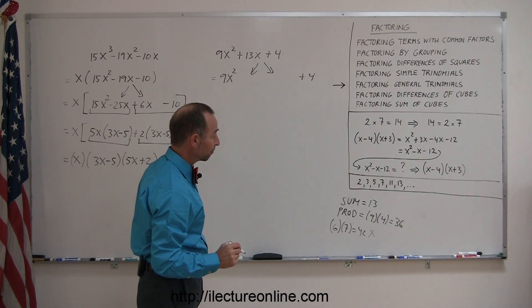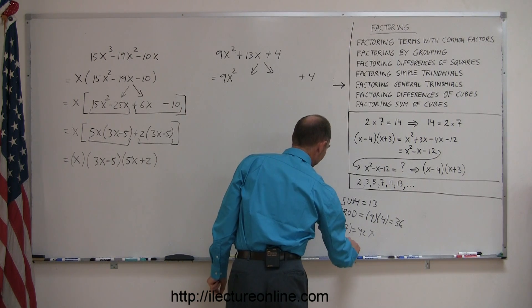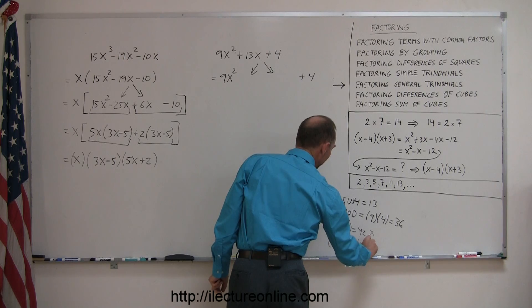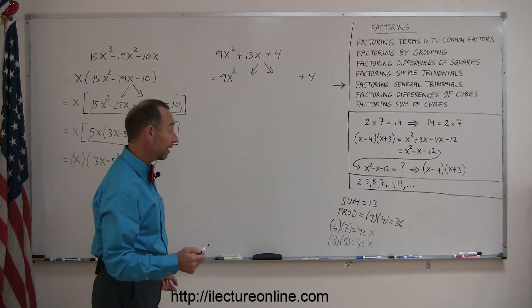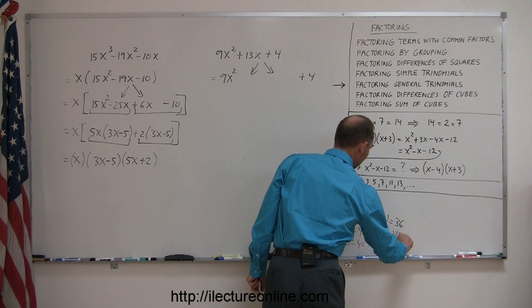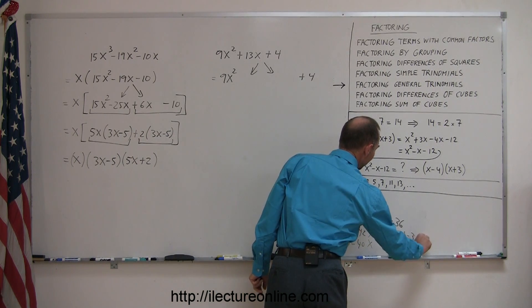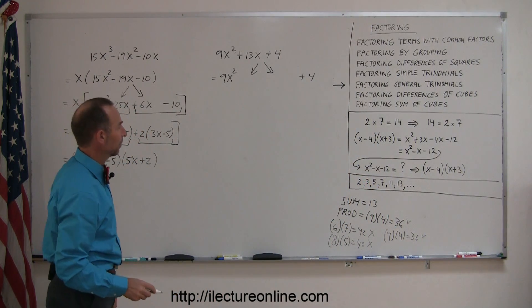How about 8 and 5? 8 and 5... well, that gives you 40, which is still not the right number. You're looking for 36. How about 9 and 4? So you try 9 and 4. And bingo, that adds up to 36. That's the same numbers there. So the two numbers you were looking for are 9 and 4.